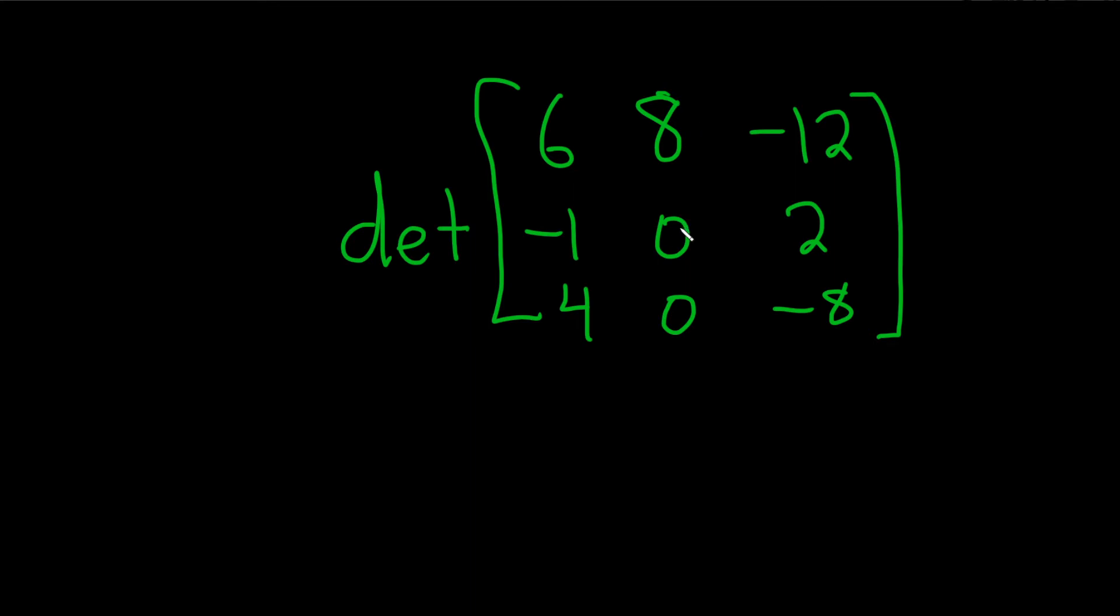So what else can we do? If you can multiply a column by a number to get another column, then the answer is also zero. And it looks like the first column and the third column might be good candidates for this type of behavior.